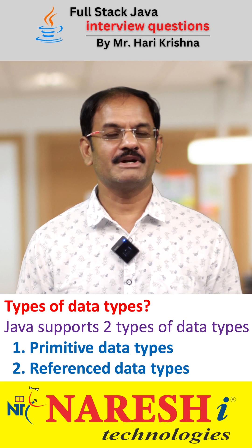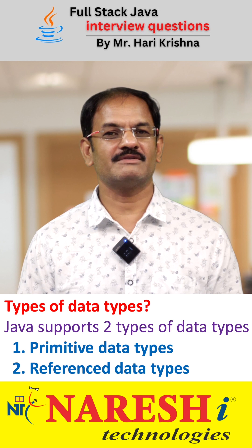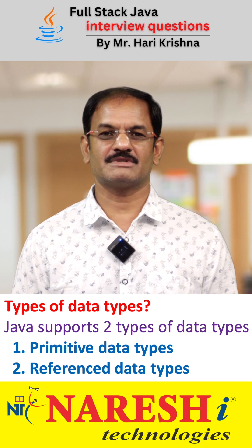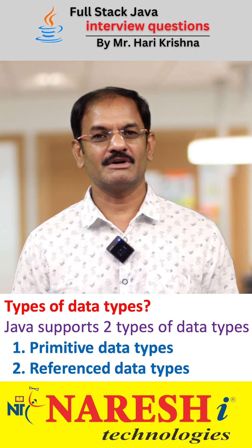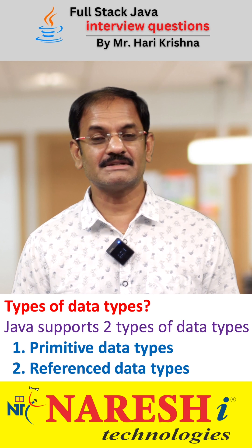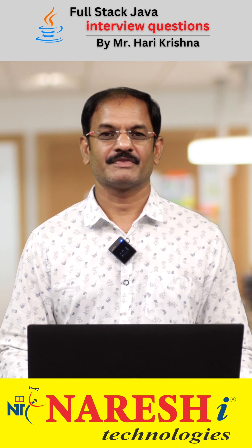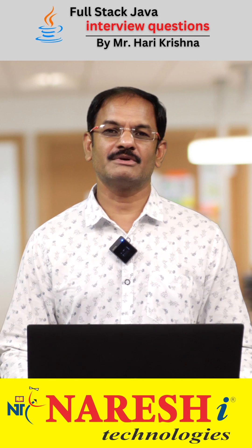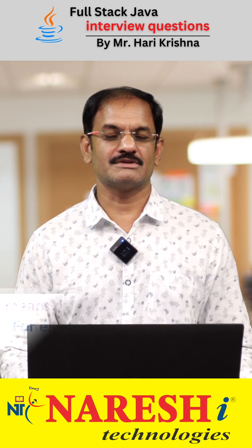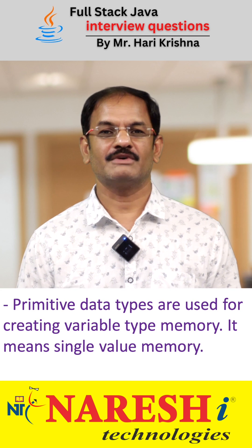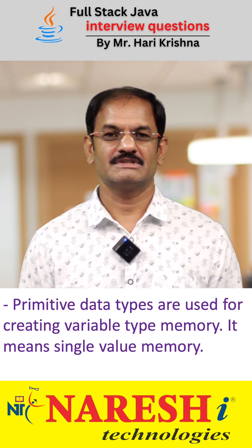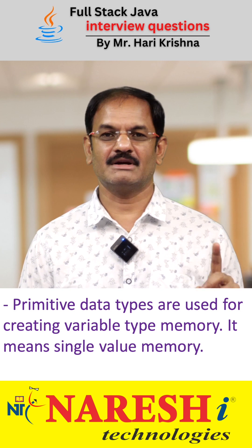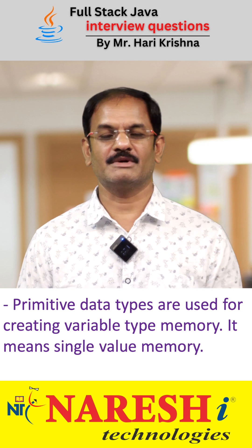So, to repeat: Java supports two types of data types. Number one, primitive data types. Number two, reference data types. What is the purpose of primitive data types? It is used for creating variable memory for storing one mathematical value — a single mathematical value.